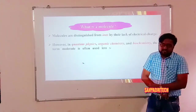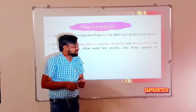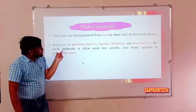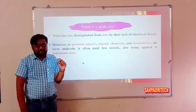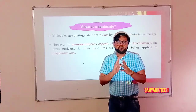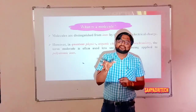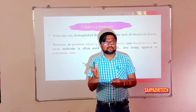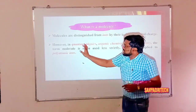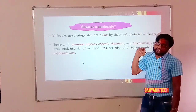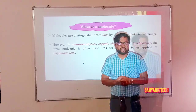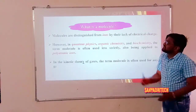However, in the fields of quantum physics, organic chemistry, and biochemistry, ions are also referred to as molecules. Practically, a group of atoms existing as one species is a molecule; if that group of atoms carries a charge, it is an ion — cationic or anionic. But in quantum physics, organic chemistry, and biochemistry, the word molecule is used for all neutral species as well as polyatomic ions.